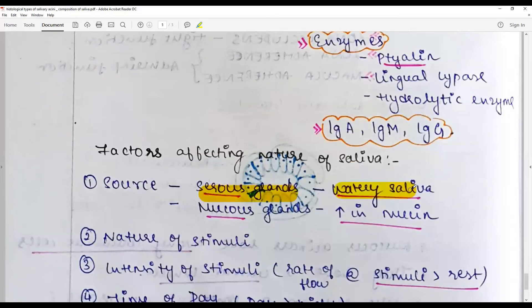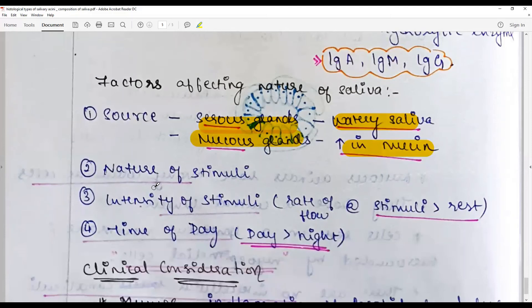Factors affecting the nature of saliva secretion: serous glands secrete watery saliva, mucous glands secrete mucinous thick saliva. The nature of stimuli - if it is strong taste oriented they produce a copious amount of serous secretion. If it is time-based, they secrete more mucous. Intensity, rate of flow - stimuli more than at rest, time of day - increased salivation during the day and less during night.